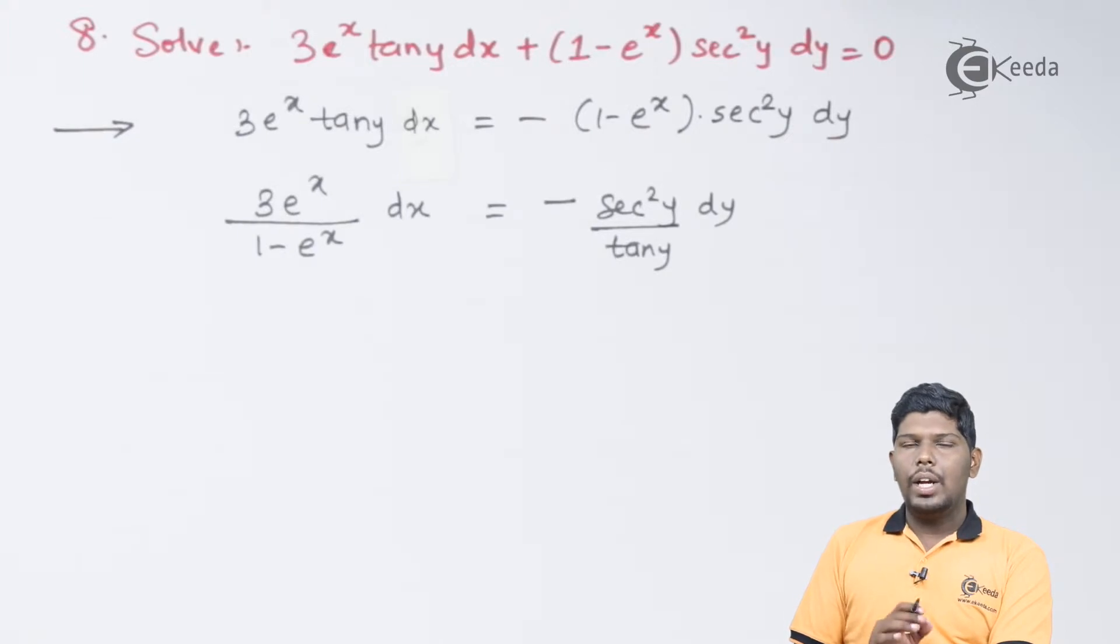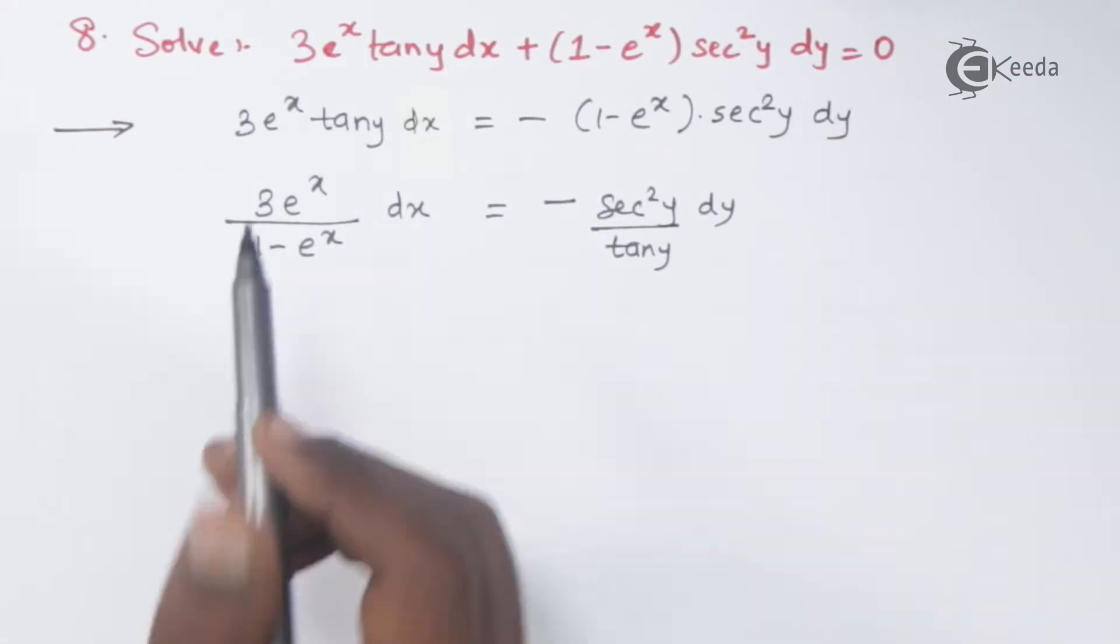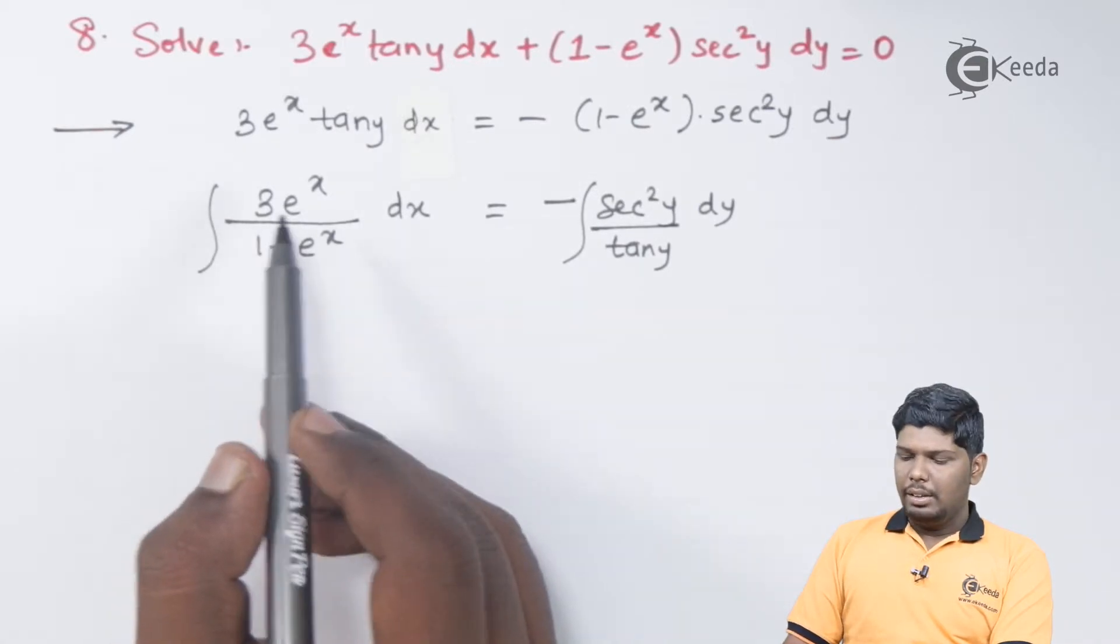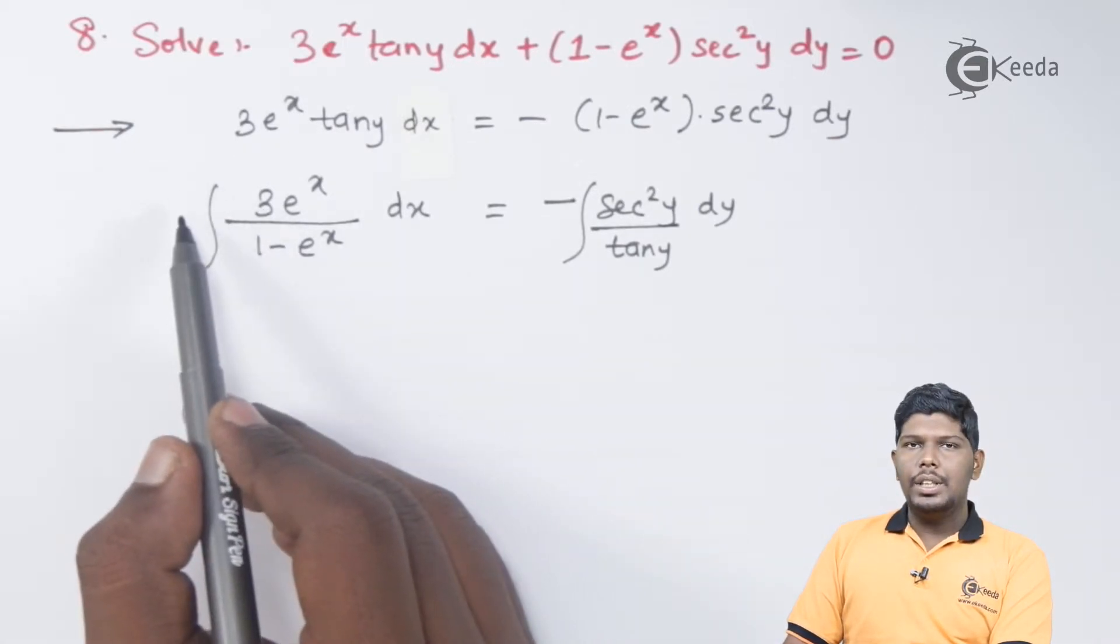Once the variables are separated, we can integrate on both the sides. To integrate the left hand side, 3 will be taken outside which is a constant.